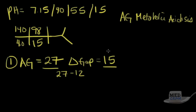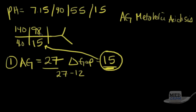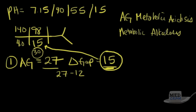With a delta gap of 15, there are 15 units of conjugate base with released protons that consumed bicarbonate. If we wave away the anion gap metabolic acidosis and add the delta gap of 15 back to the current bicarb of 15, we get 30. A bicarb of 30 would indicate a metabolic alkalosis occurring at the same time. So we have two metabolic processes occurring simultaneously.